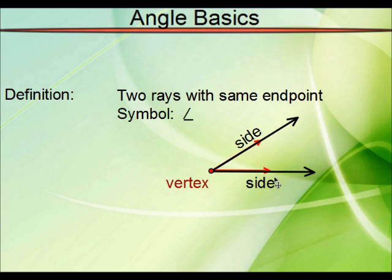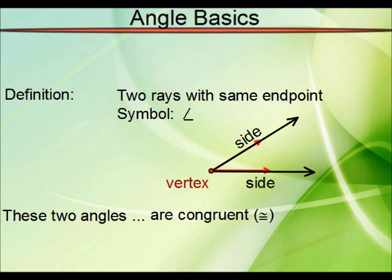What makes an angle different from another angle is not how long these sides are drawn, but rather how far open they are drawn. Because we can draw these things as long as we want, these two angles essentially are congruent. And recall that congruent simply means that they are the same size and the same shape.